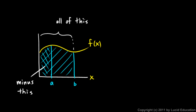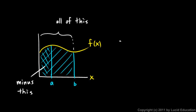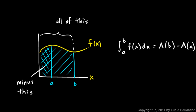So if we take all of this area and subtract this piece, what's left is the area we're looking for. We can write the integral from a to b of f(x) dx is going to be A(b) minus A(a).